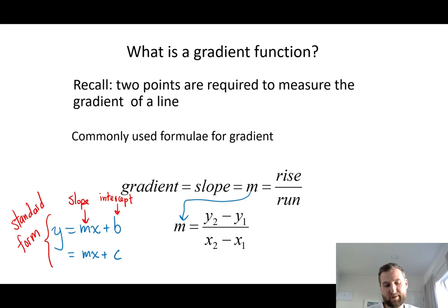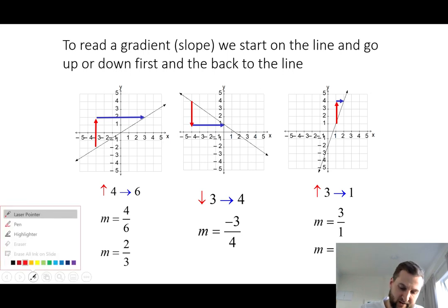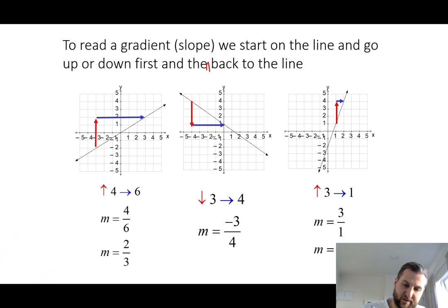So using any two points, we can calculate the gradient or the slope between them. So let's take a look. So here we have a couple of examples. To read a gradient, we start on the line, and then go up or down first, and then back to the line. So what does this mean? Just like my vertical line test, when we read math and equations, we read from left to right.